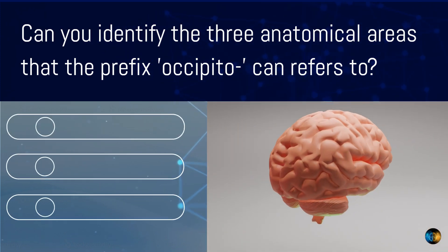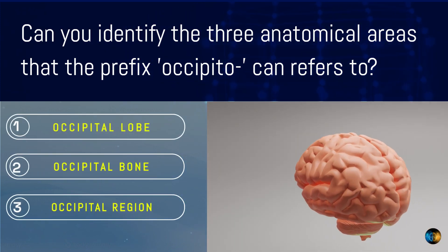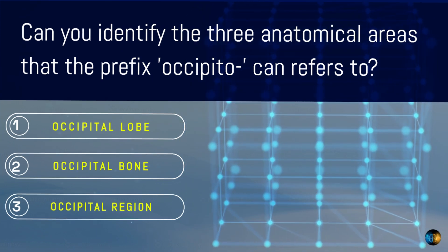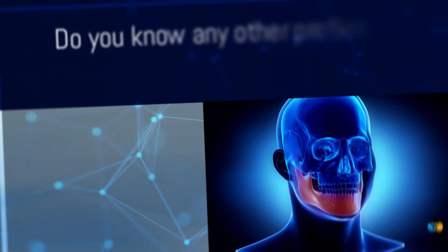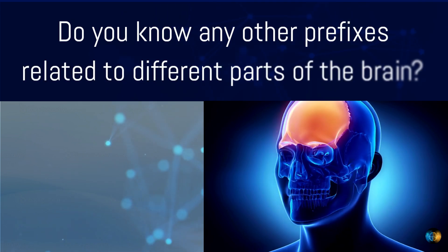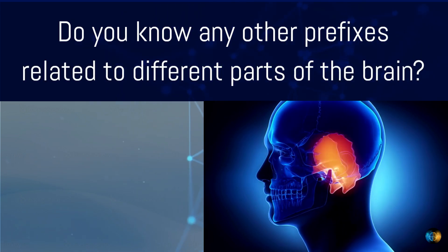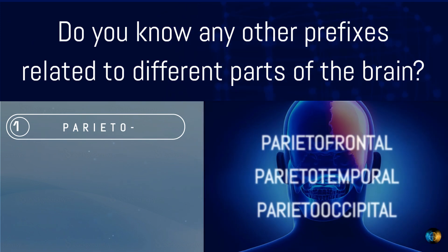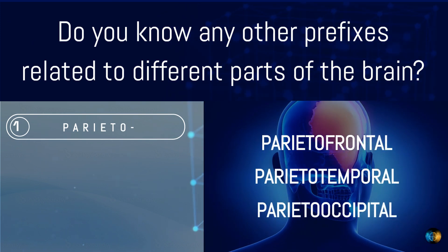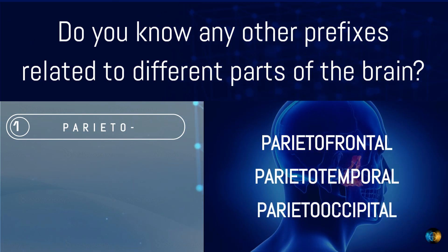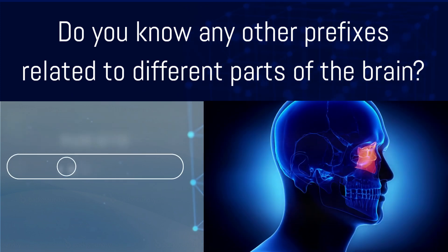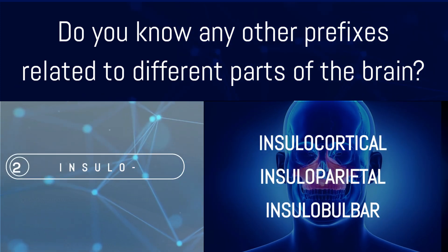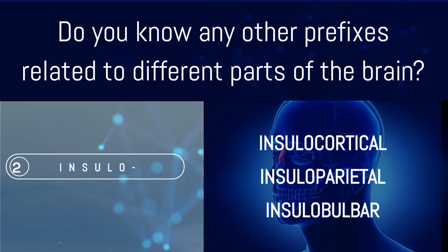Can you identify the three anatomical areas that the prefix 'occipital' can refer to? The occipital lobe, occipital bone, and occipital region. Other prefixes related to different parts of the brain include 'parieto' — for example, parietofrontal, parietotemporal, and parietooccipital — and 'insulo' — for example, insulocortical, insuloparietal, and insulobulbar, among others.